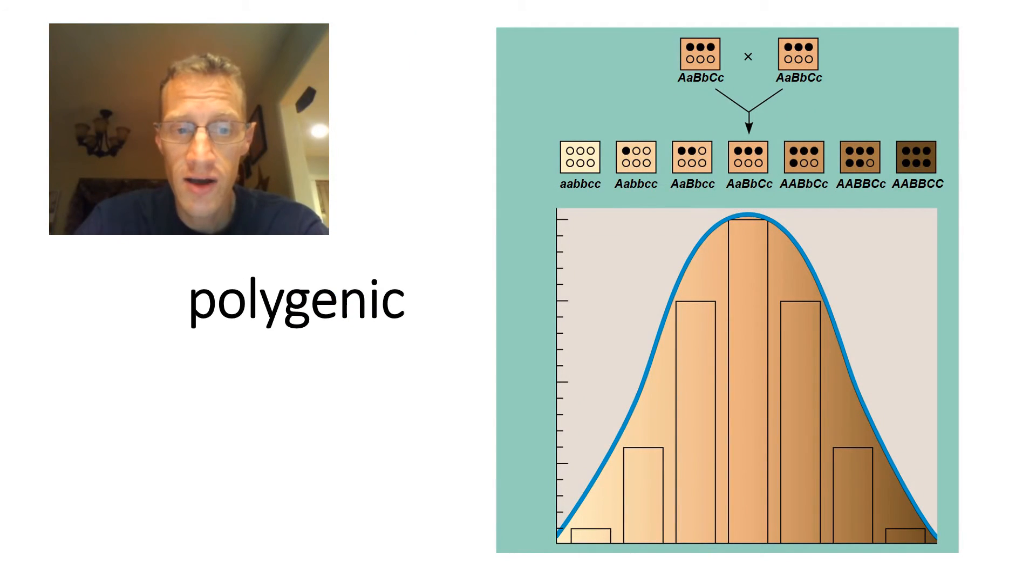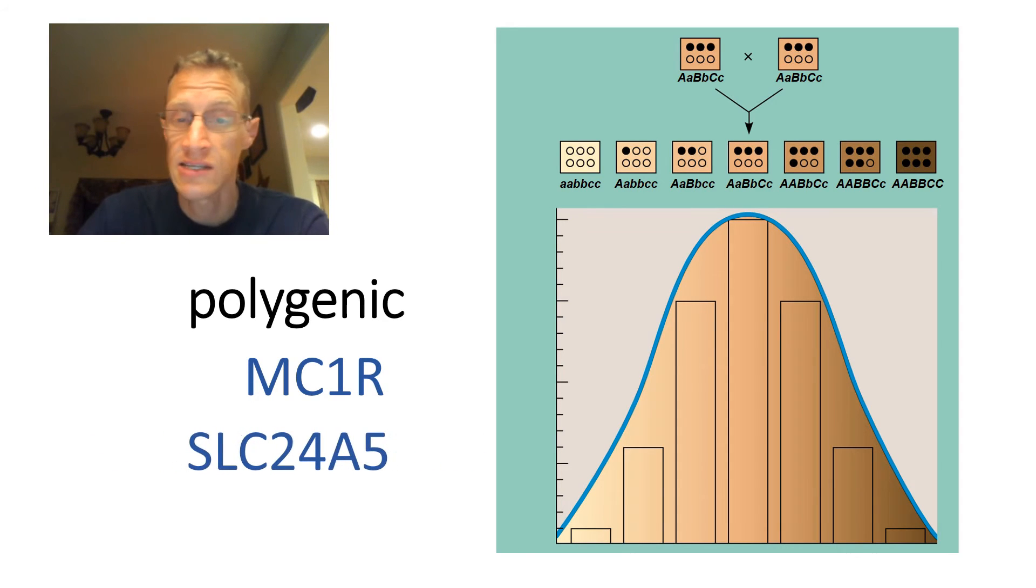The last example of where the law of dominance doesn't fit is polygenic inheritance, which means many genes control one trait. And a common example here is skin tone. Skin tone is coded for by multiple different genes, including ones like MC1R and SLC24A5. Why can't scientists name these genes something cool, like Bahamatan? The more dominant alleles you have, the darker your skin tone. And each of these genes shows incomplete dominance, which increases the amount of variation even more.